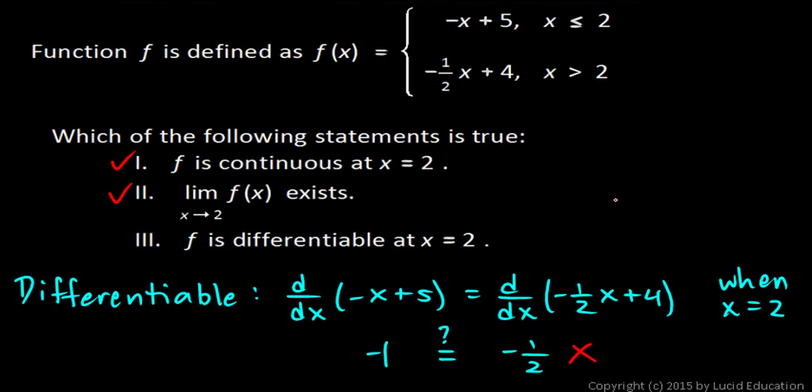So when those lines meet, they have different slopes. So they come together and form a corner right there. So statement 3 is not true. It's not differentiable at x equals 2, because it is not smooth at that point. So statements 1 and 2 are true.